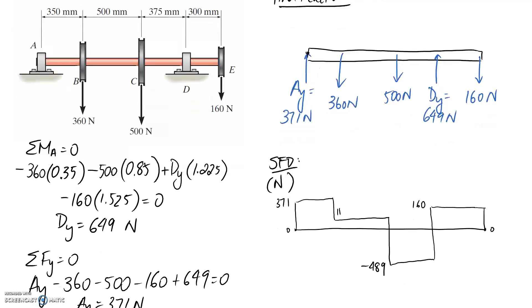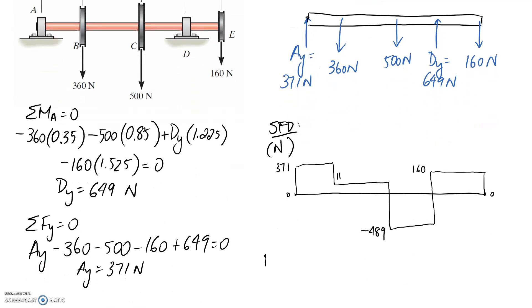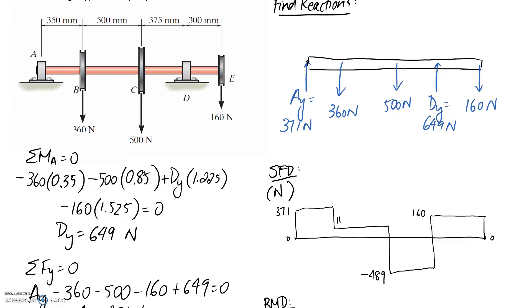That's the complete shear force diagram. Now we need to draw the one for bending, and I'm going to draw it with the units of newton meters. Let's just quickly pop on all our measurements in here along the beam that we were given. So we've got 0.35 meters, 0.5, 0.375, and 0.3.